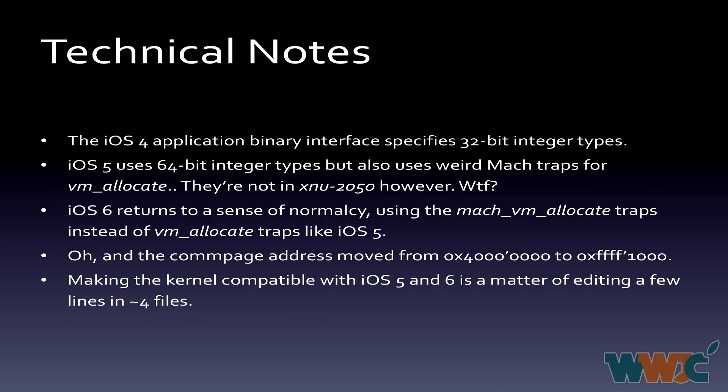Some technical notes on the differences between iOS 4, iOS 5, and iOS 6: the iOS 4 application binary interface specifies 32-bit integer types for things like Mach VM address and VM app address. iOS 5 switched over to 64-bit integer types, which may have been a preliminary measure to get ready for the 64-bit architecture seen in the iPhone 5S.